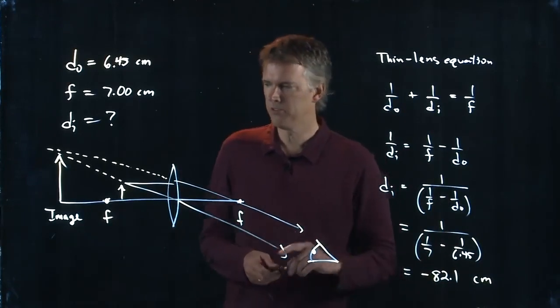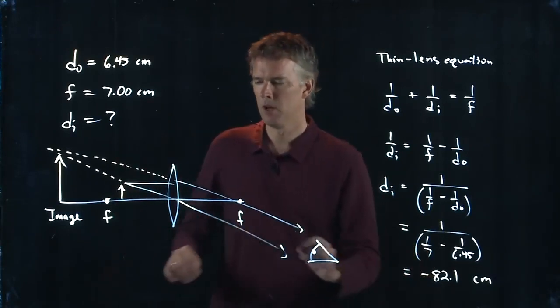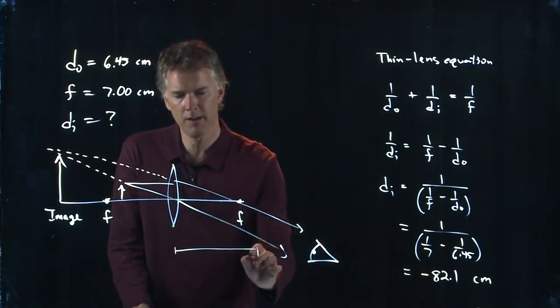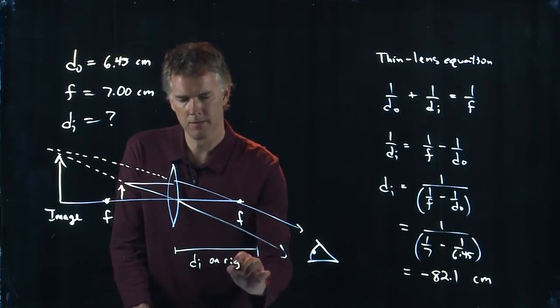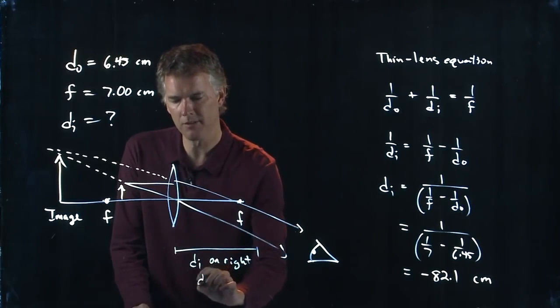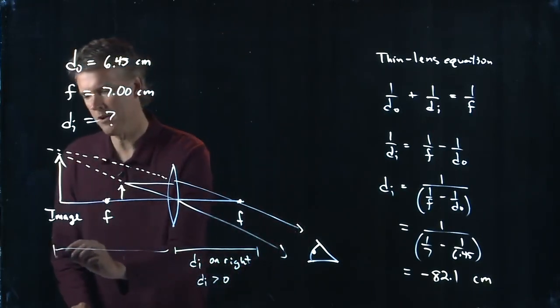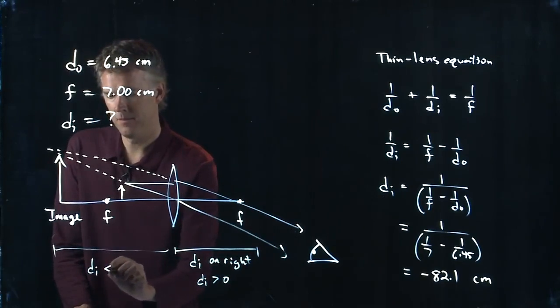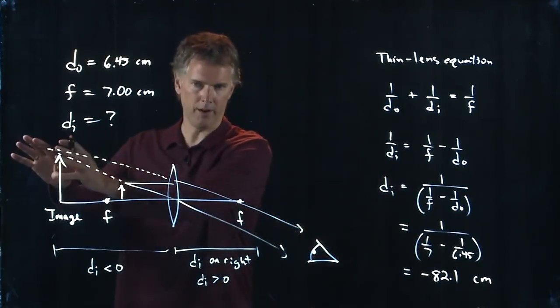So what does it mean to be negative? Remember if the image is over here, then it is positive. But if the image is over here, then it's negative. So that's what the negative means. Negative means it should be over there.